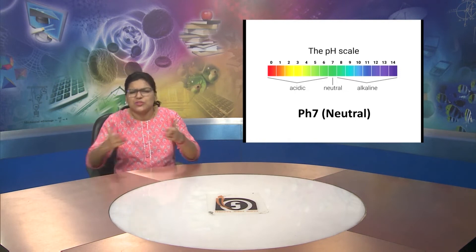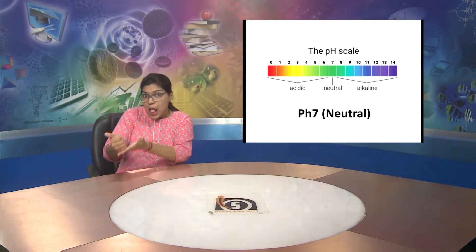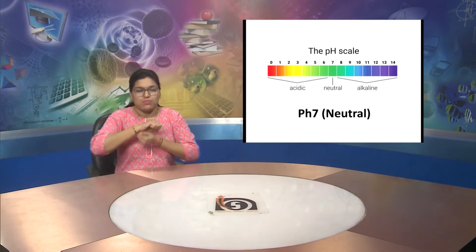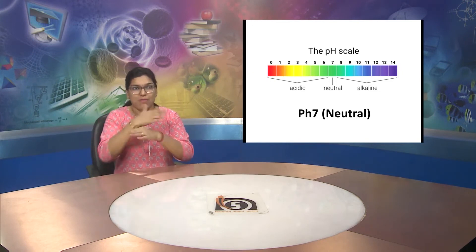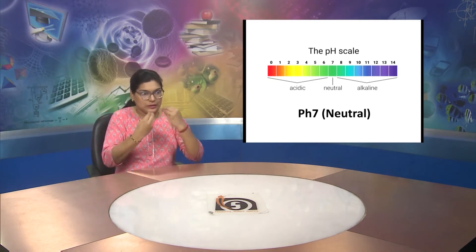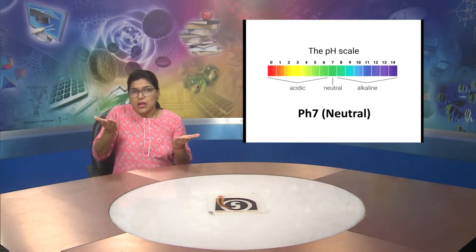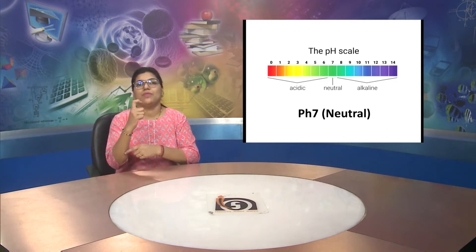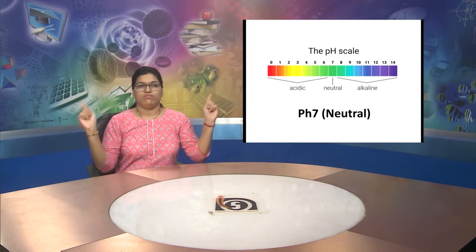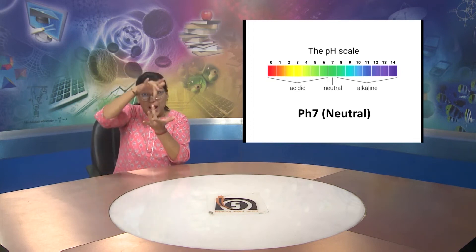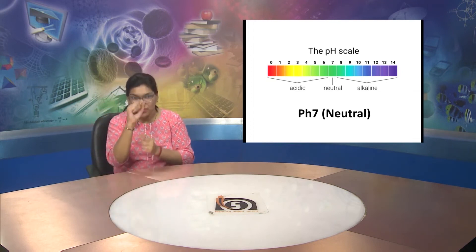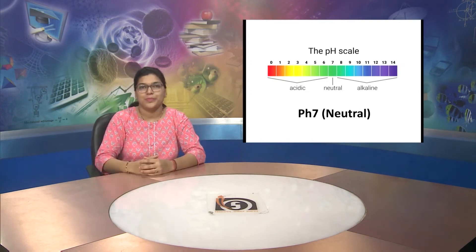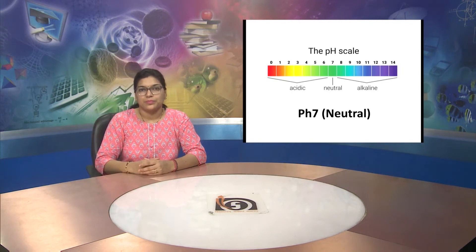Acidic and base balance has to be maintained in our body. It's very important. Anything which is in excess acid or base will be harmful. Both have to be in the balanced form. The pH scale on level 7 is the neutral form of the pH level.